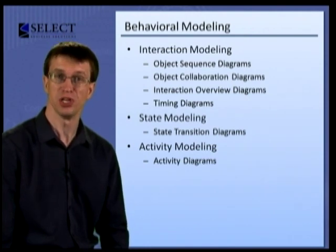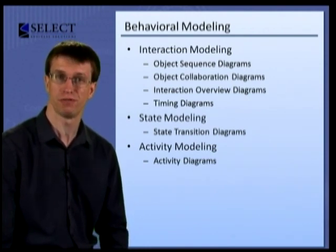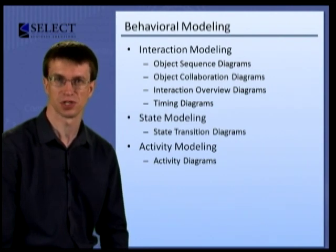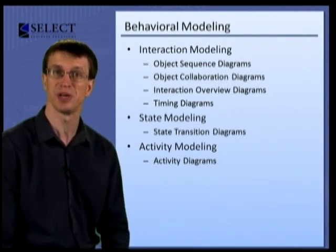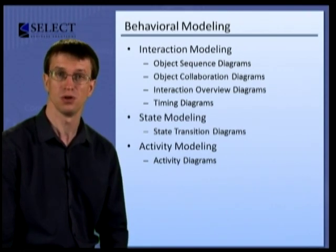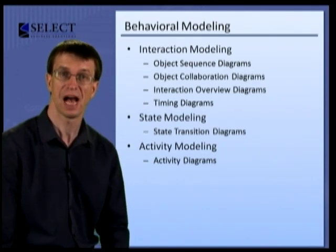The interaction model in UML2 now consists of four diagrams. Firstly, the sequence diagram. The sequence diagram is especially useful for developing scenarios in the model. The what if something happens, how do we react to it?